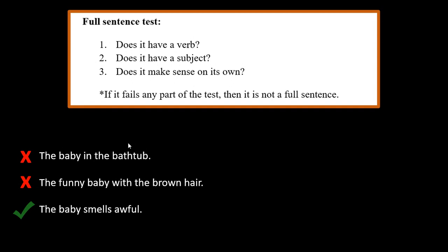In the first one, 'the baby in the bathtub,' we don't have a verb — 'bathtub' is not an action and doesn't describe the baby, so it doesn't follow our patterns. In 'the funny baby with the brown hair,' 'brown' is a description, but ask yourself: what is brown describing? The hair — the arrow goes the wrong way, so it's not working as a linking verb. In 'the baby smells awful,' the verb is 'smells,' linking 'awful' to the baby — so that one passes.